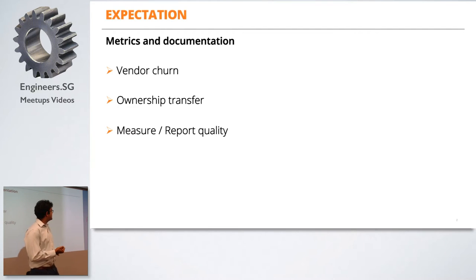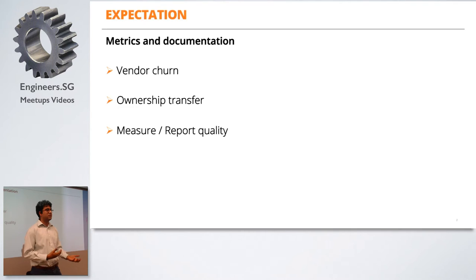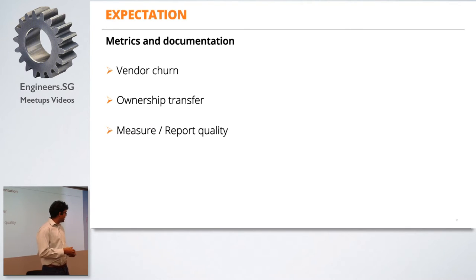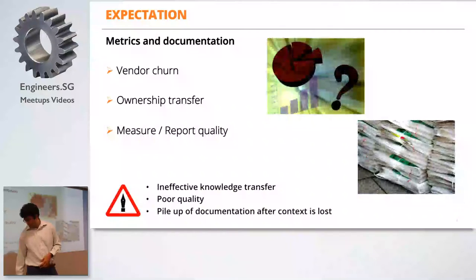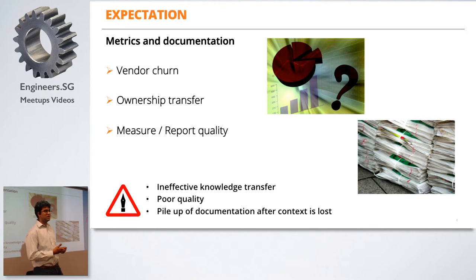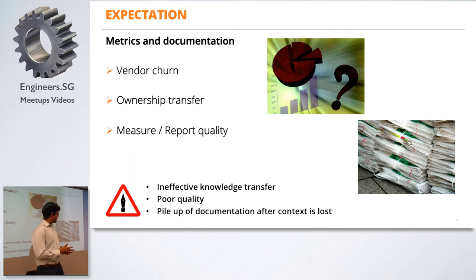The third expectation — metrics and documentation. Enterprises engage a lot of vendors, and there is vendor churn: vendors go away, new ones come. Sometimes enterprises want to take ownership of the codebase built by vendors themselves, and there is high expectation for documentation and knowledge transfer. There is also a lot of reporting and KPIs related to quality. If you don't plan for this early, it will result in ineffective knowledge transfer, risk and high cost for the enterprise. Without quality measurement tools, you end up with poor quality software, a pileup of issues towards the end, and a pileup of documentation that hasn't been done and has to be done once you've lost a lot of context.